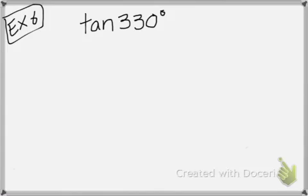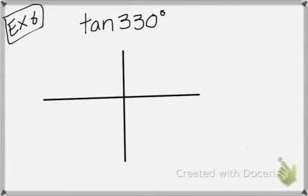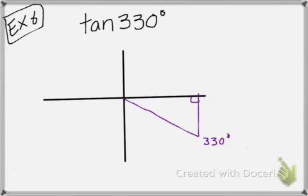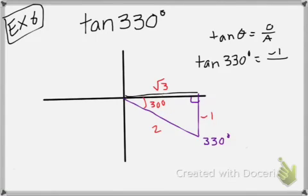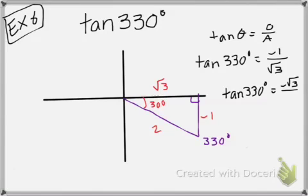What if you're not given a picture? All you have to do is create your own. I know that 330 degrees falls somewhere in quadrant 4. Drop your right triangle, and my reference angle is 30, so negative 1, 2, root 3. My ratio for tangent is opposite over adjacent. The tangent of 330 degrees is opposite, which is negative 1, over adjacent, which is root 3. Rationalize, and you get tangent of 330 degrees is negative root 3 over 3.